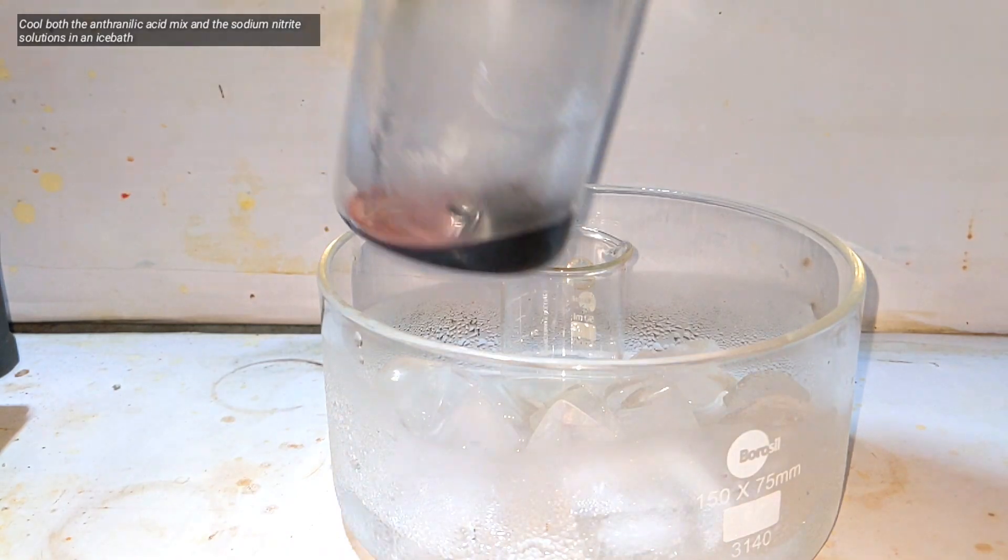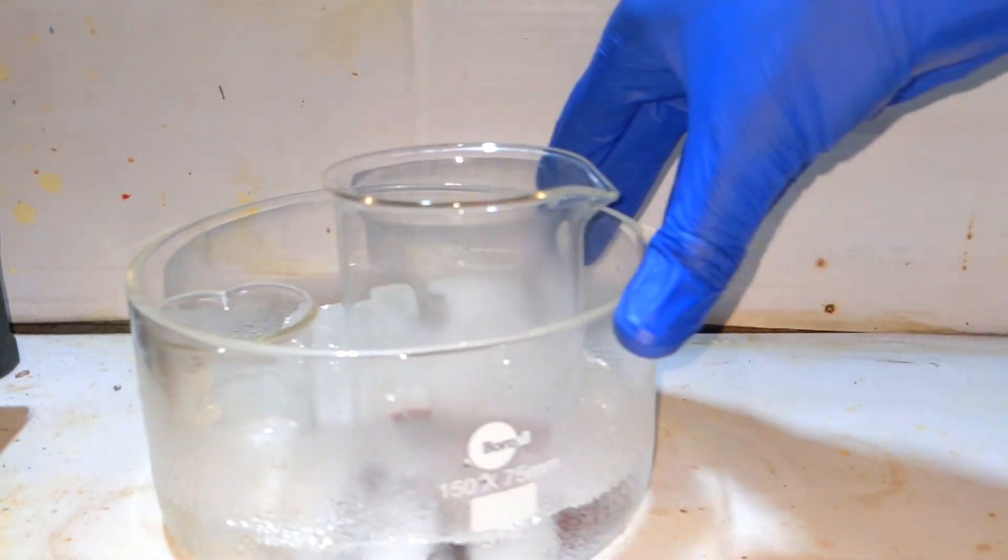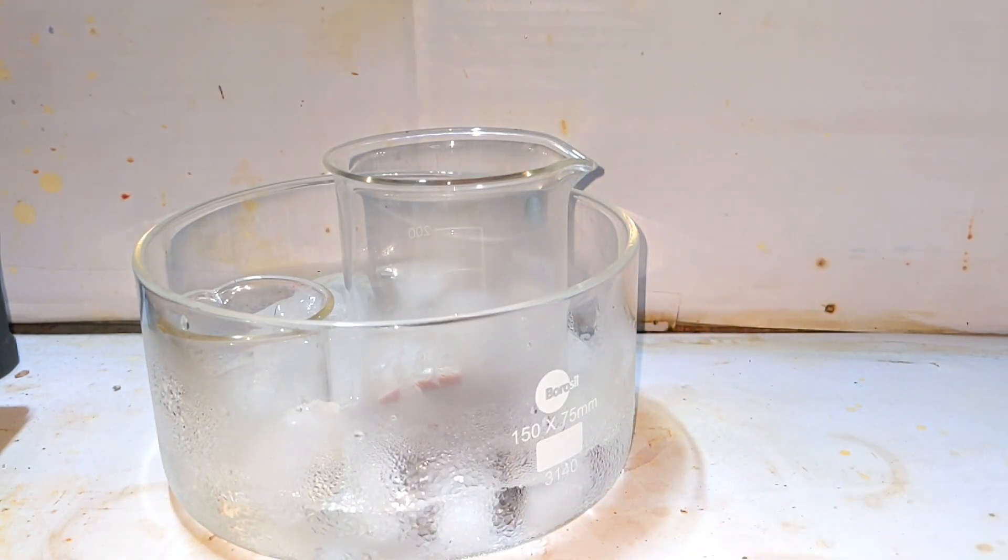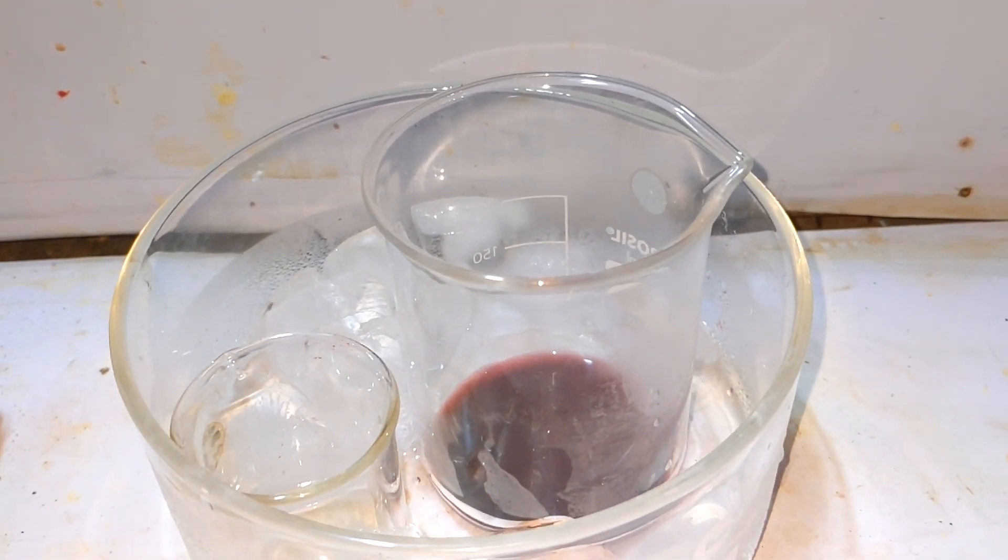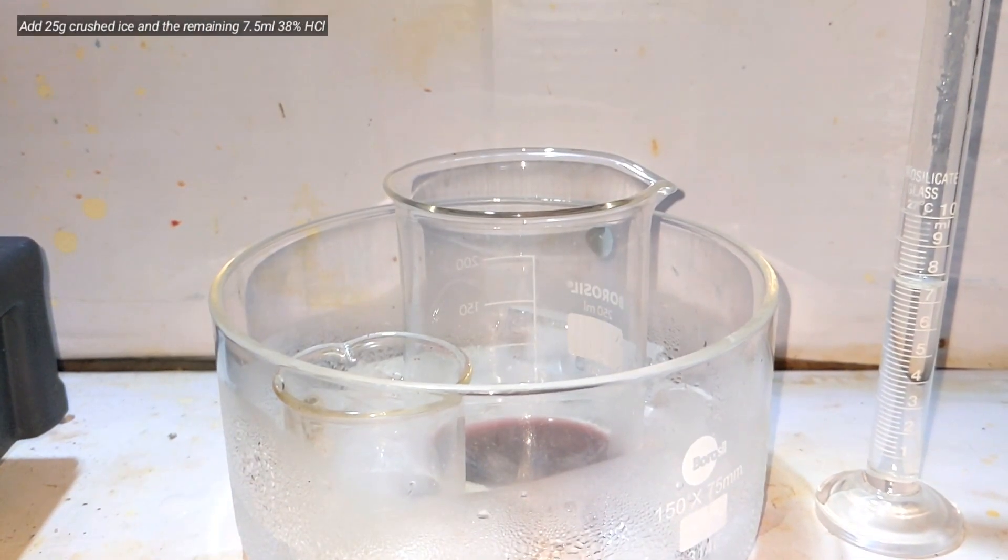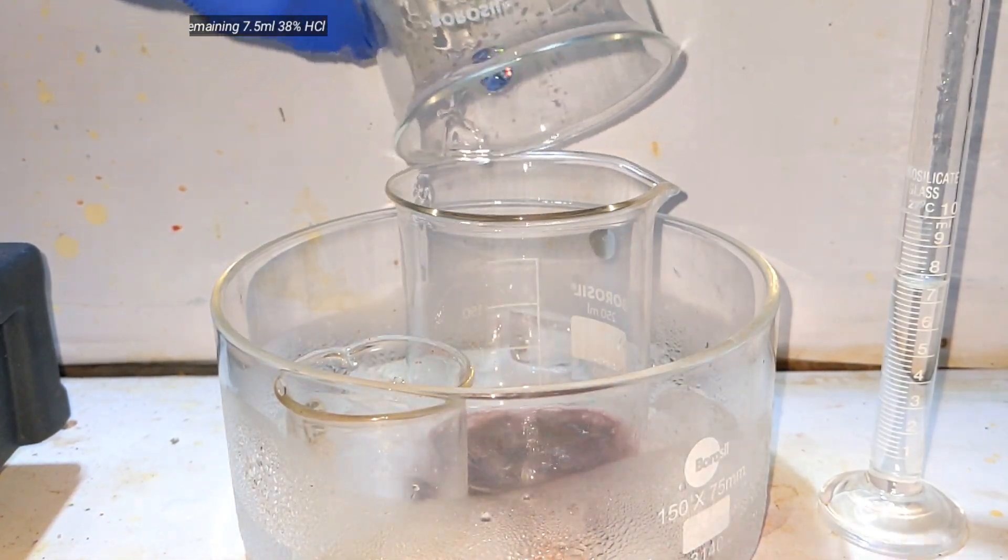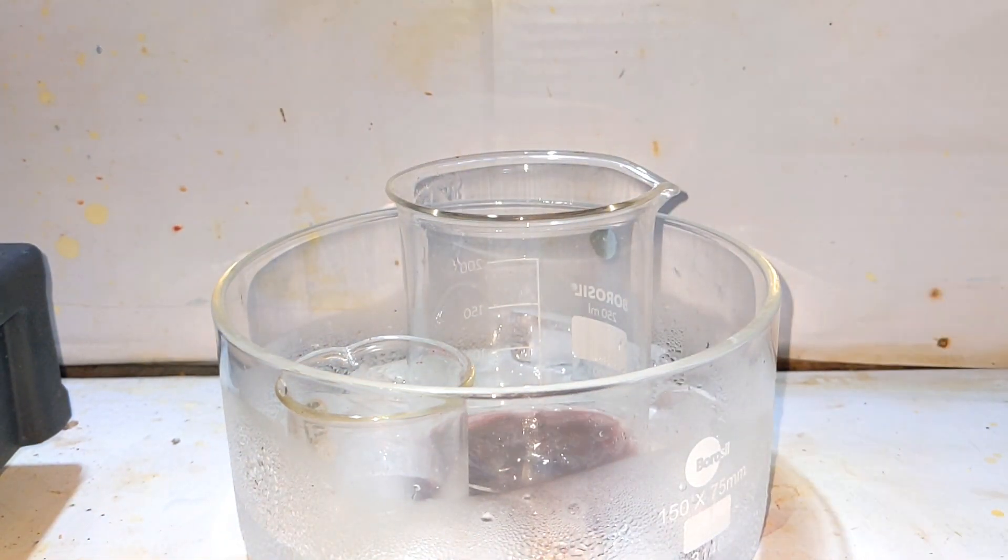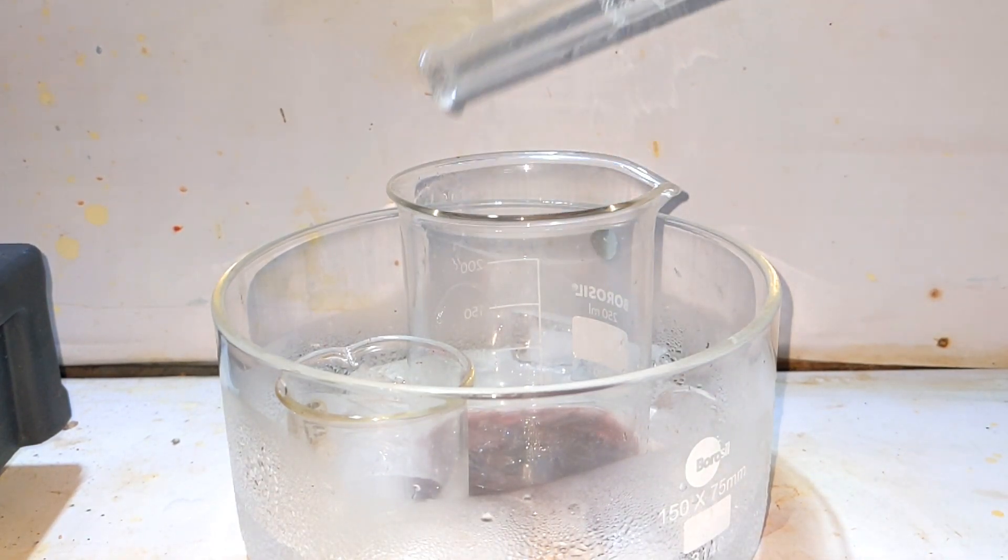The solution was then placed into an ice bath to cool down to less than 5 degrees Celsius. Our sodium nitrite solution is already inside chilling. To cool down further we add 25 grams of crushed ice and the remaining 7.5 milliliters of the 37% hydrochloric acid was then added to the mixture.